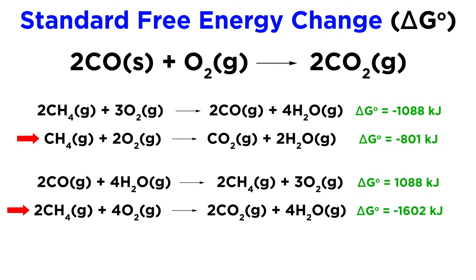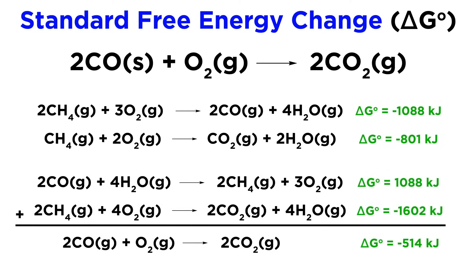If we flip the first one and double the second one, these will combine to give us the reaction in question, because water and methane cancel out. We must therefore do the same thing to the delta G values. The first will have its sign reversed, and the second one will be doubled. Adding those together gives us negative 514 kilojoules as the standard free energy change for this process.